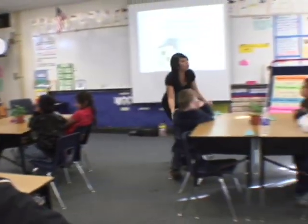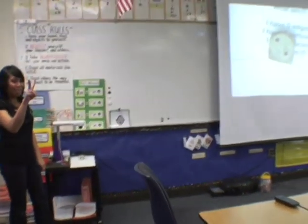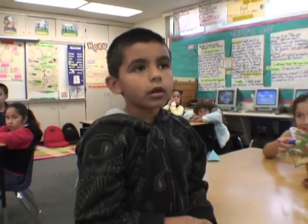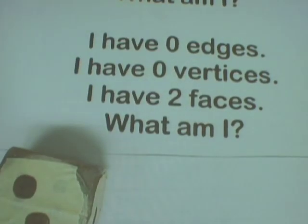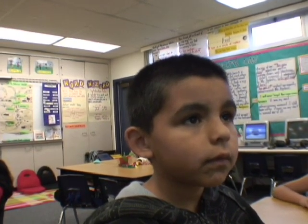I'm going to roll your individual number first. If I roll a three, all the threes be prepared to share. Then I'll roll the table number. I'm rolling number two. Make sure every number two is in agreement and knows what to share using a complete sentence. Hector — table two, number two — stand up and share out. The solid figure is... the cylinder.